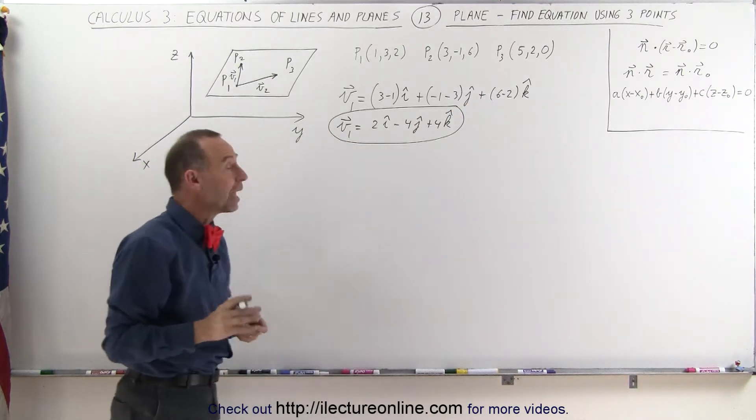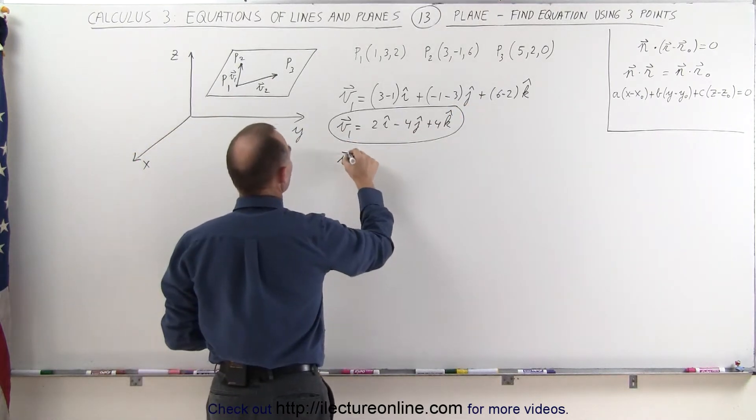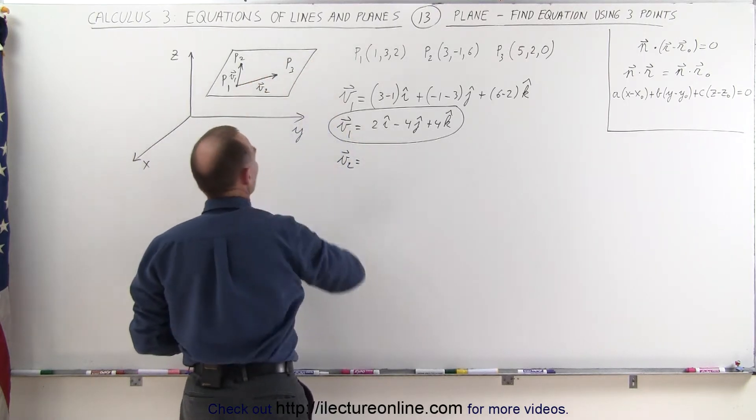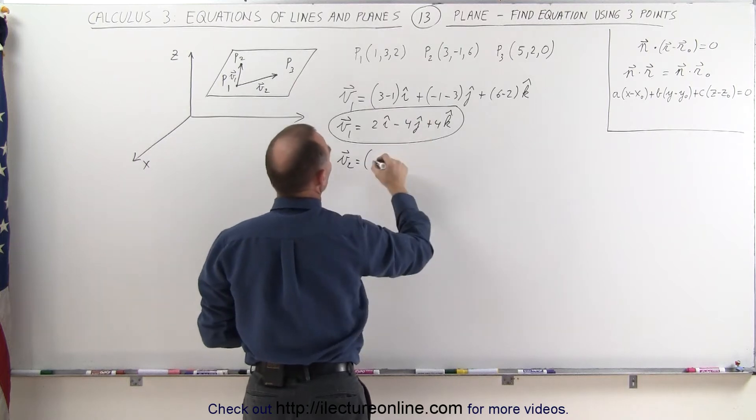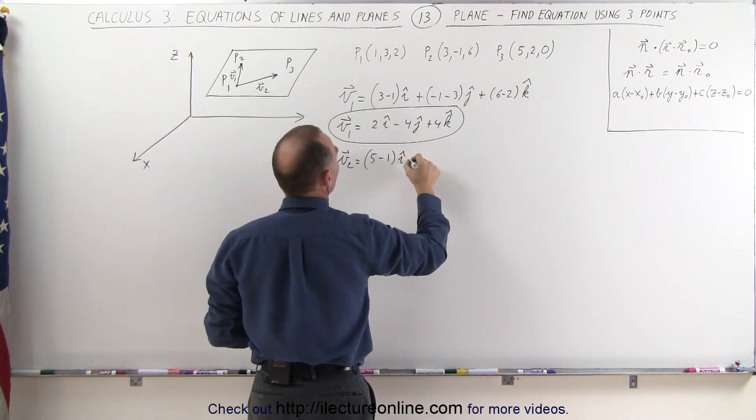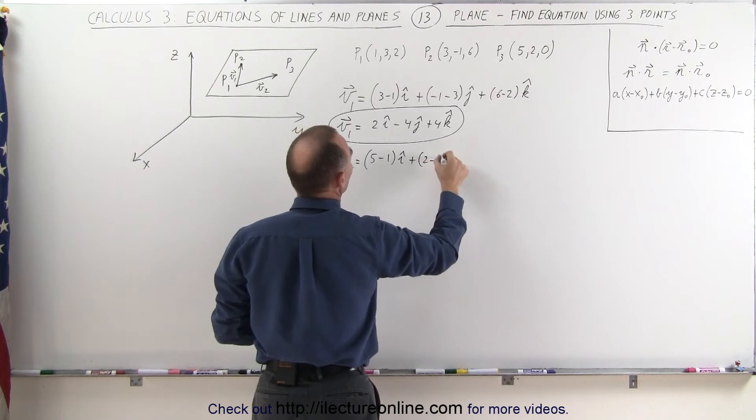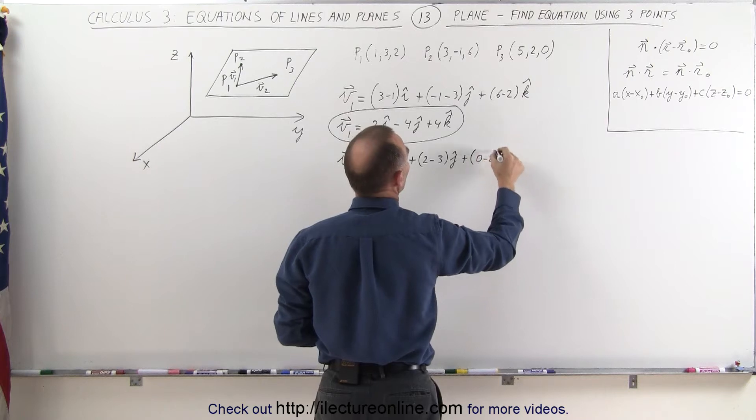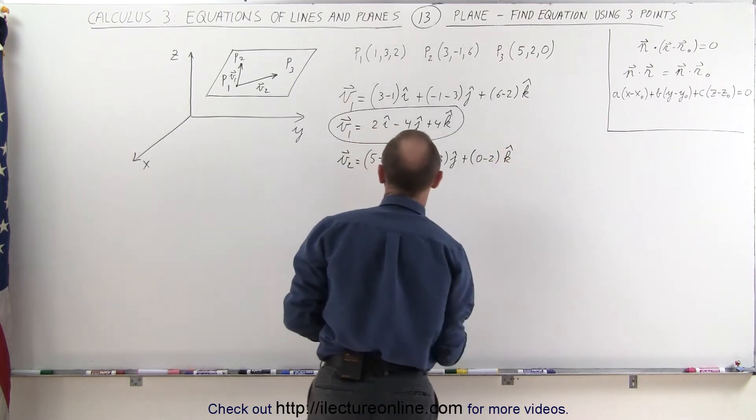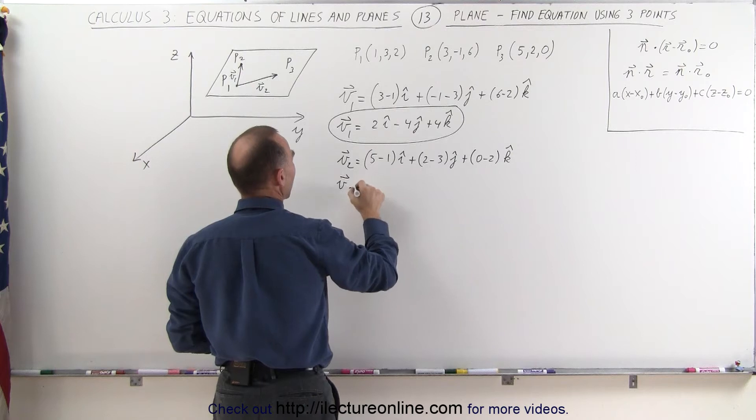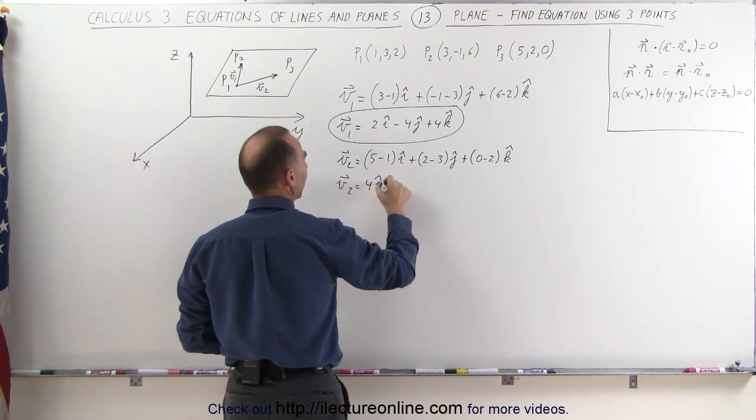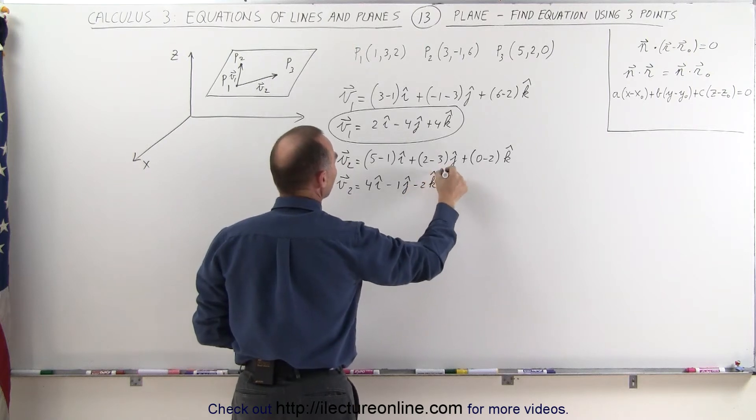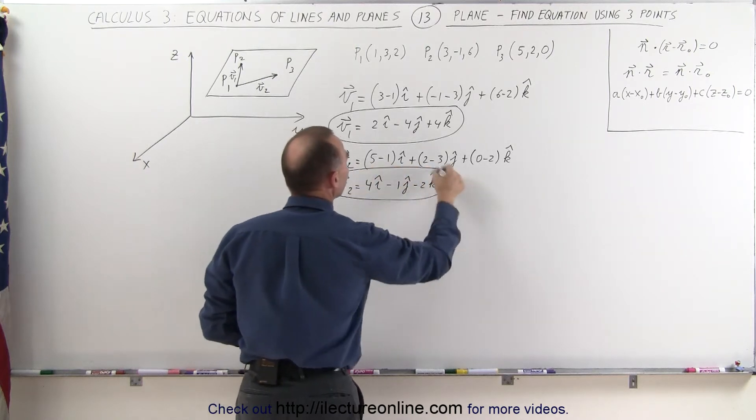I can do the same thing now with v2. v2 can be defined as taking the coordinates of point 3, subtracting from that the coordinates of point 1. This would be equal to 5 minus 1 in the i direction, plus 2 minus 3 in the j direction, plus 0 minus 2 in the k direction. And simplifying that, our second vector now becomes 4 in the i direction, minus 1 in the j direction, and minus 2 in the k direction. Let's circle that one as well.